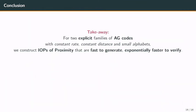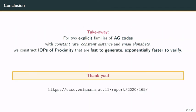As a conclusion: for two explicit families of AG codes that are easily encodable, have constant rate, constant distance, and small alphabet, we are able to construct IOPPs which are fast to generate and exponentially faster to verify. Thank you for your attention.